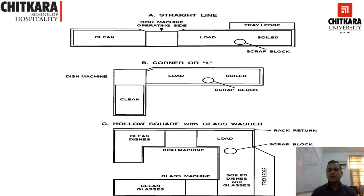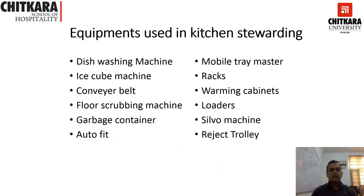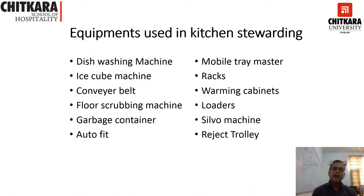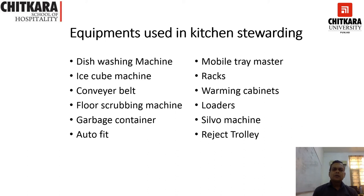The equipment used in the kitchen stewarding department includes the washing machine, which can come in different forms: a single drum, two-drum, or three-drum system. There is also an ice cube machine in the back area, handled by the kitchen stewarding department. Dishwashers have a conveyor belt through which soiled equipment passes for cleaning. The kitchen stewarding department also cleans floors using a floor scrubbing machine.